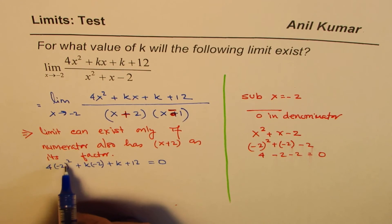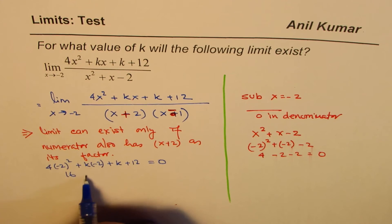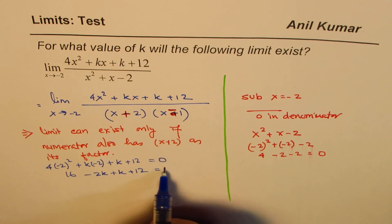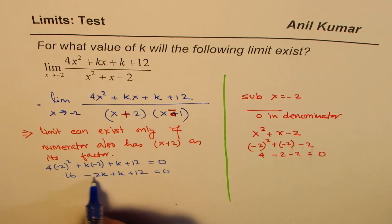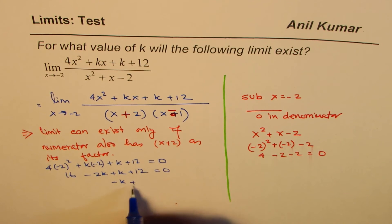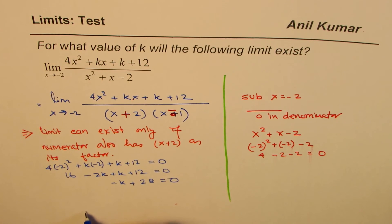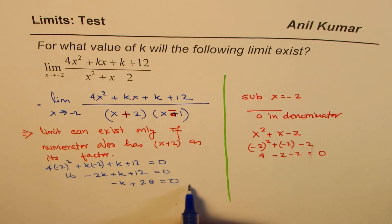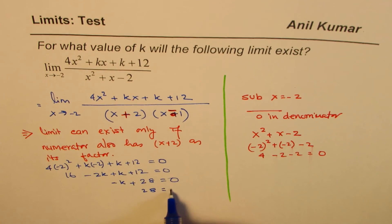So 4 times minus 2 squared is 16. This is minus 2k plus k plus 12 equals 0. So that is minus k and 16 plus 12 is 28 equals 0. And now, once I take it to that side, I get 28 equals k.